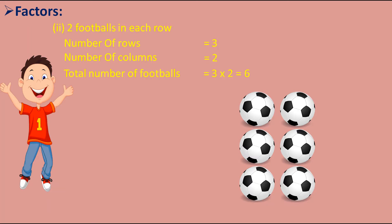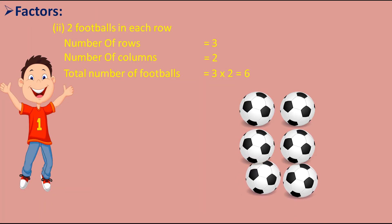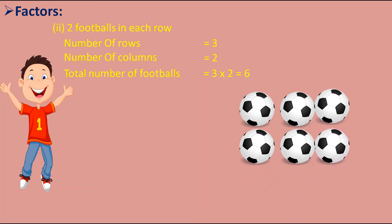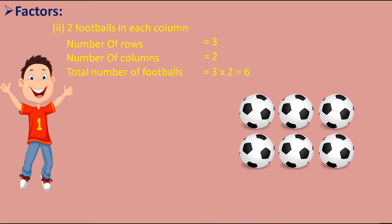Now he tried to put two footballs in each column. So two footballs are in each column, the number of rows are two and the number of columns are three. So the total number of footballs can be written as 2 × 3 = 6.